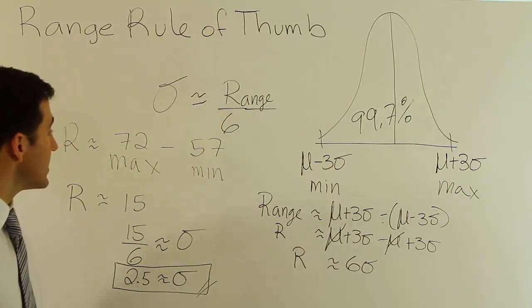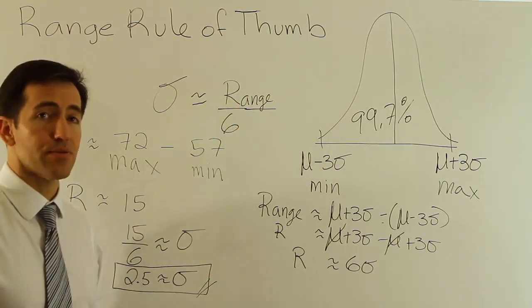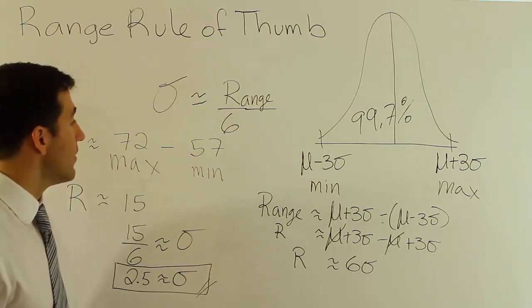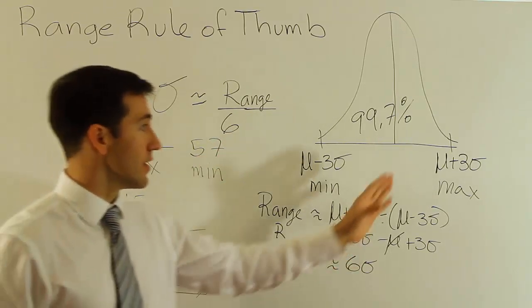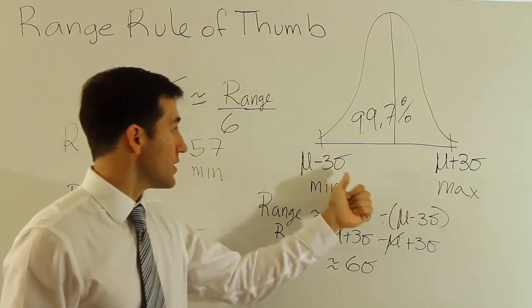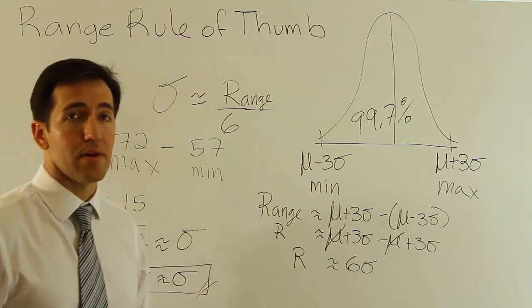And finally, before we leave the video, I just want to say that don't forget range over 4 is sometimes used as the range rule of thumb as well. So if you see the range over 4, it's the equivalent idea. It's just that they're only using the mean plus 2 standard deviations and the mean minus 2 standard deviations as their max and their min.